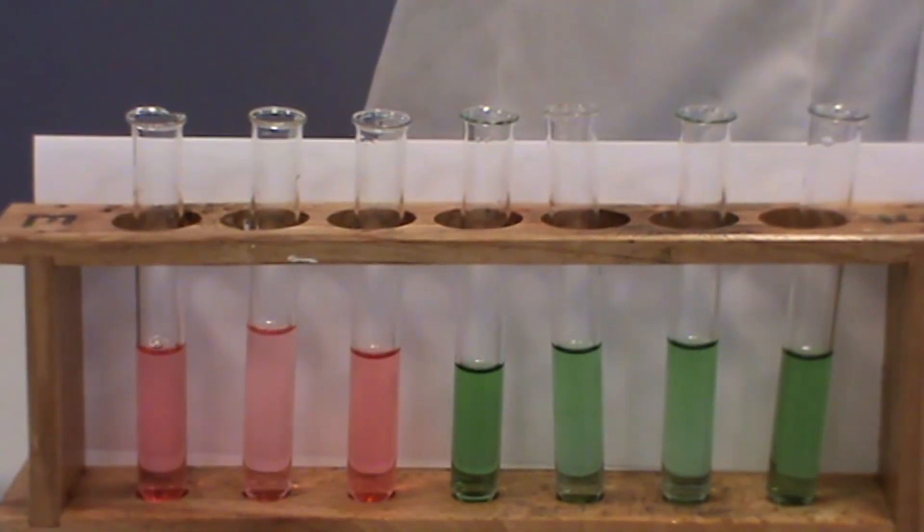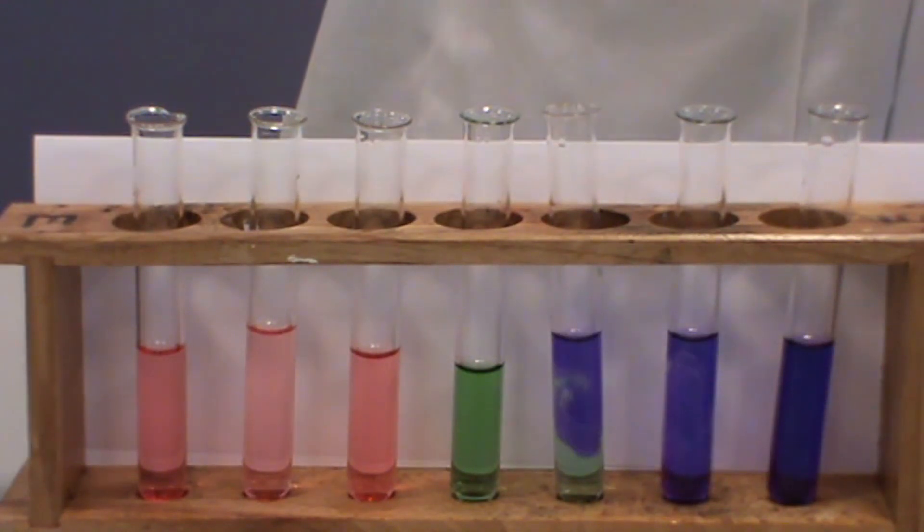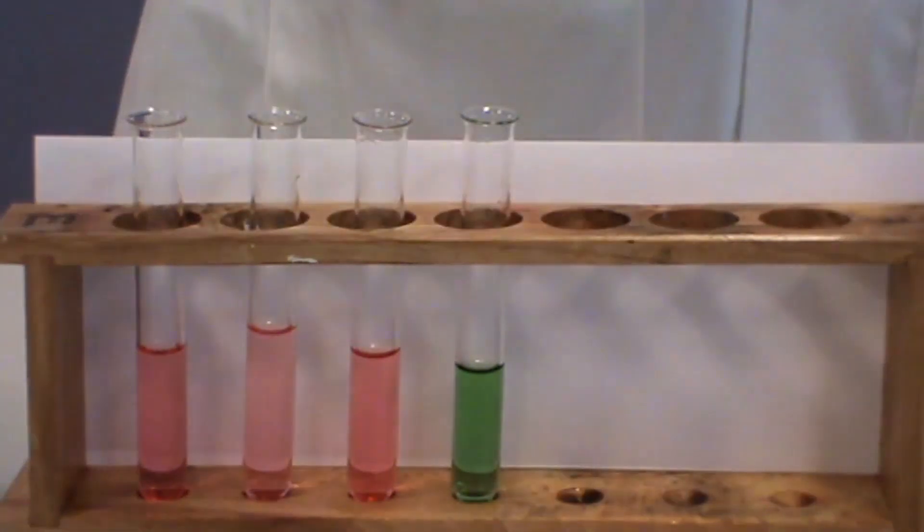Several drops of sodium hydroxide are added to another three of the test tubes. These are then also shaken up to produce a purple colour, indicating the solutions are very alkaline.